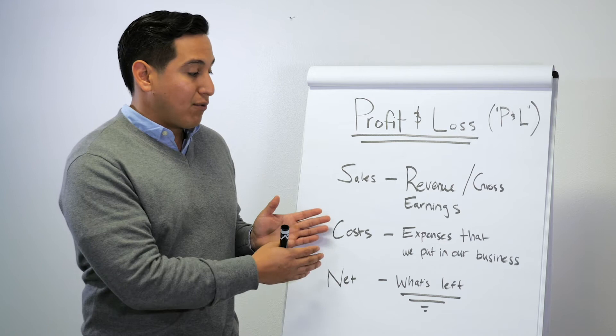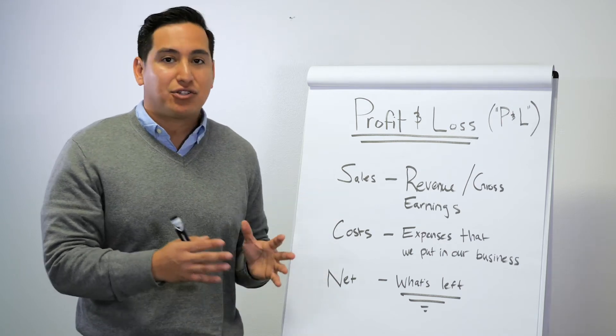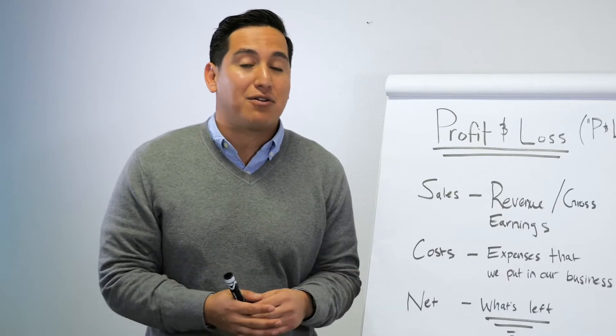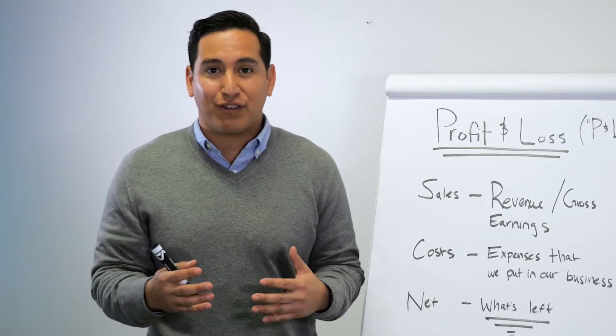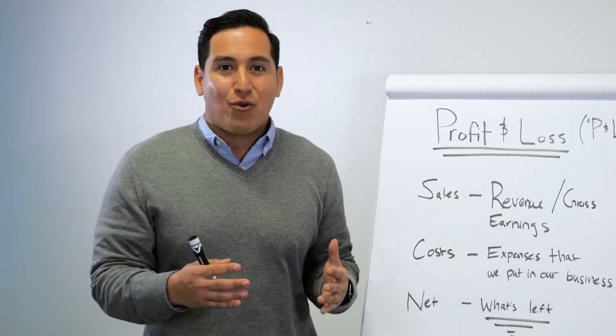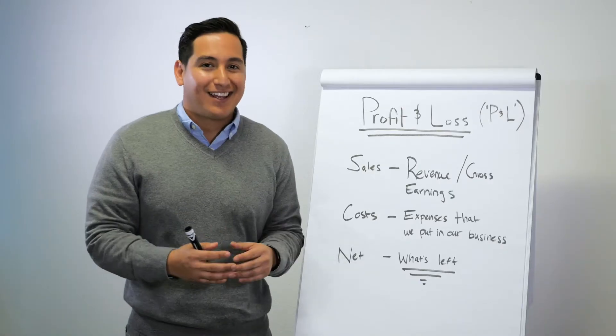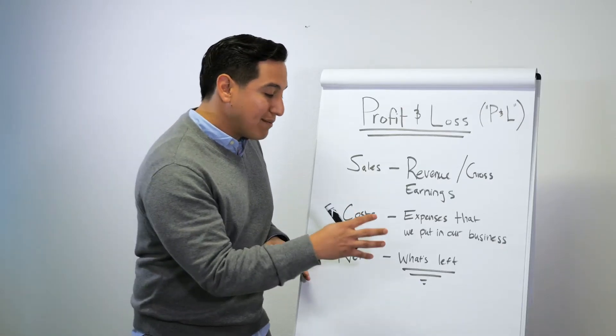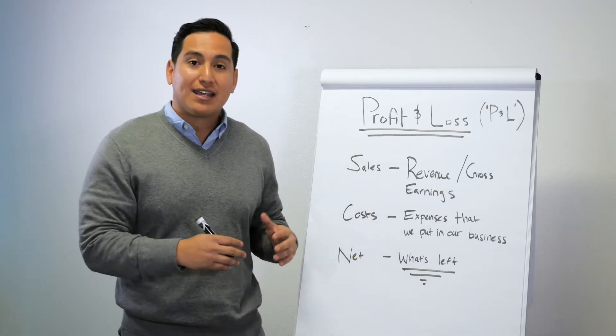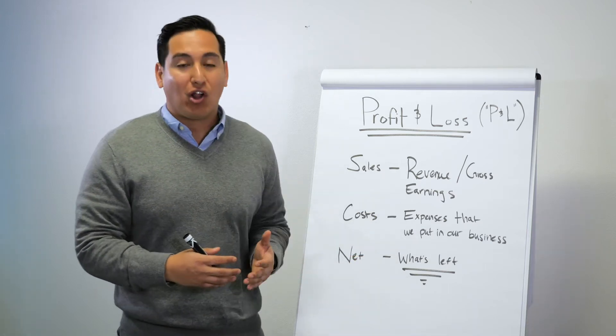Now what do you get when you take costs from sales? You get your net. Net essentially is what's left. It comes from the Latin word meaning trimmings. So if you used a piece of cloth for something, whatever is left, the trimmings, is going to be the net. What really matters is going to be what you have after all is said and done.